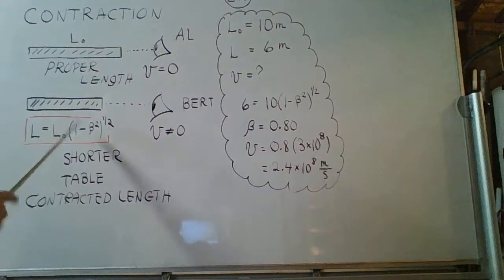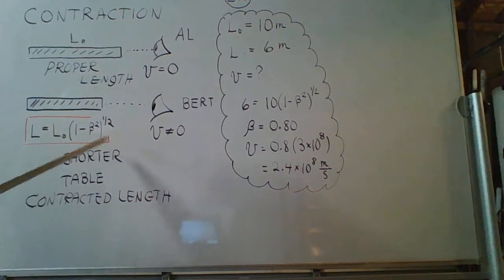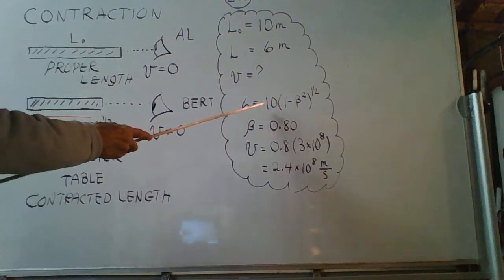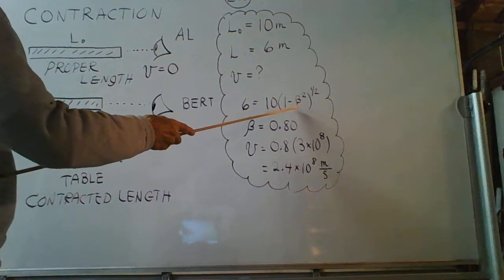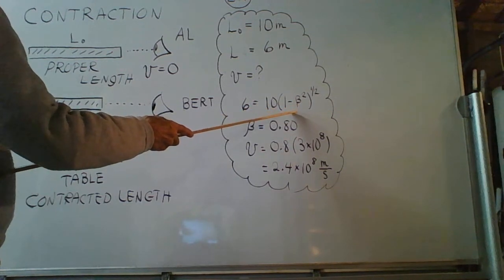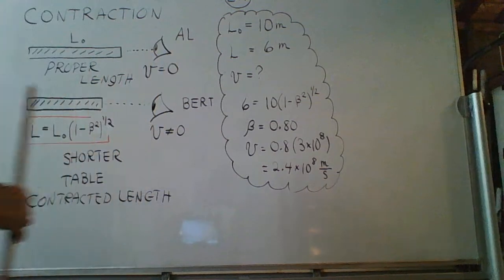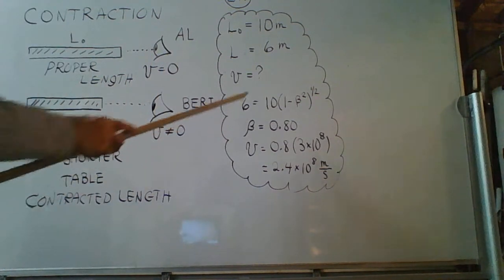Well, we put to use the equation here in the red box. 6 equals 10 times that now very familiar parentheses to the one-half power. And we solve for beta.